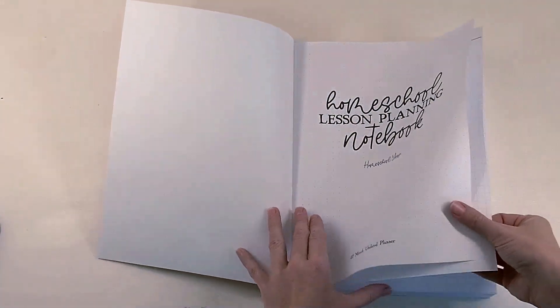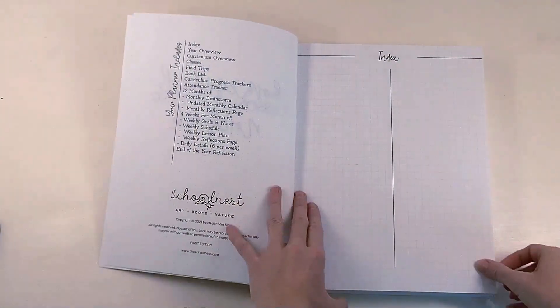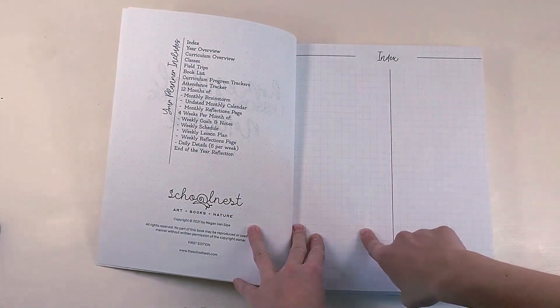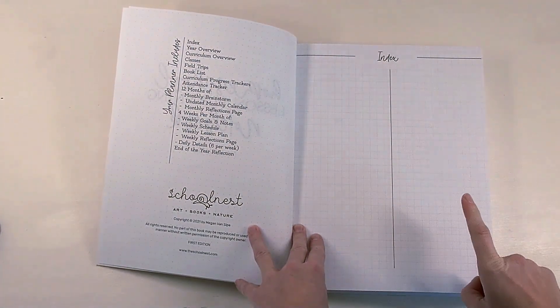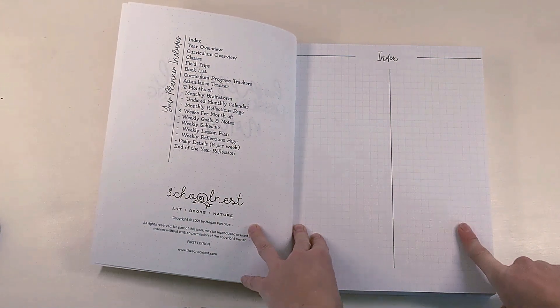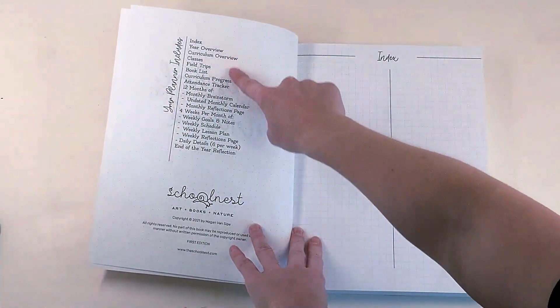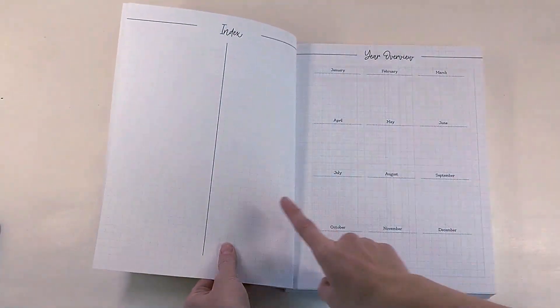Okay, so we come to the intro page, and because this is so big, I assume they added this fun index here so you can keep track of where you have written important things for your homeschool. We have their own index here, and then you have yours here and on the back.